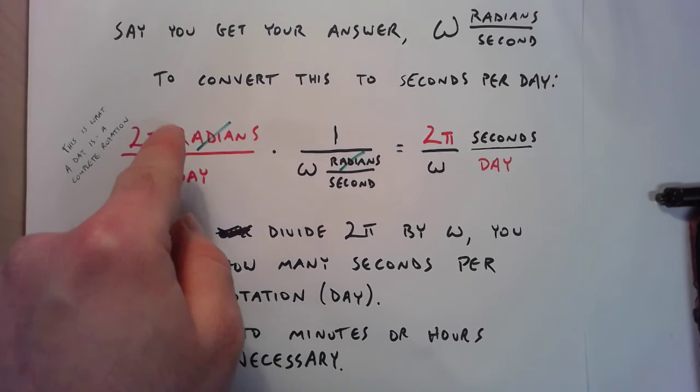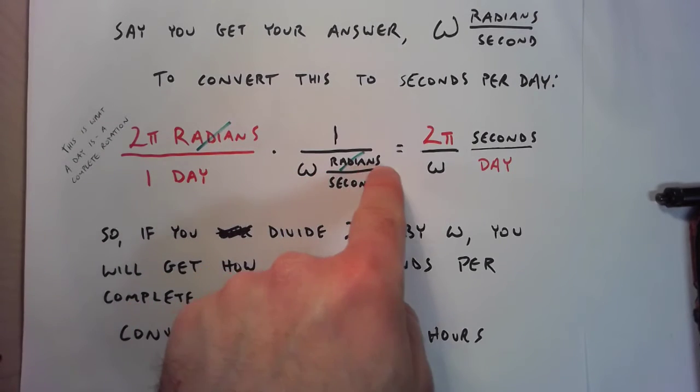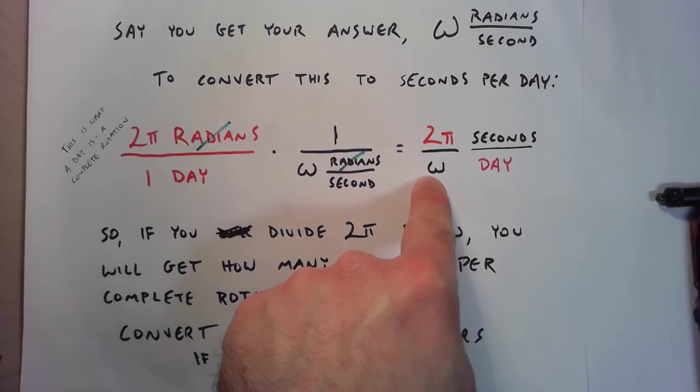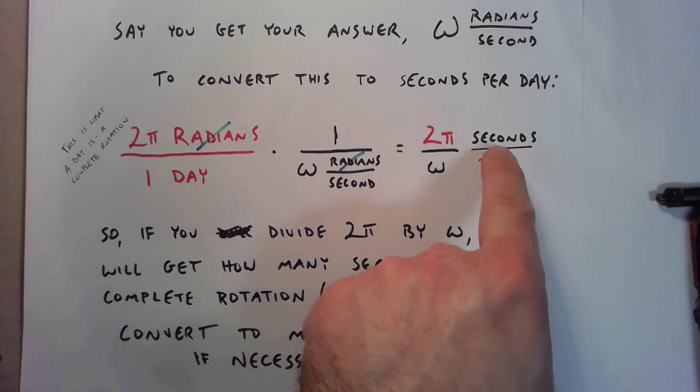Now if you take this, multiply it by that, the units work out so that it's 2 pi radians over omega radians per second, the units work out to be seconds per day.